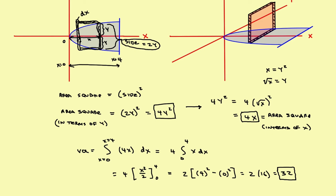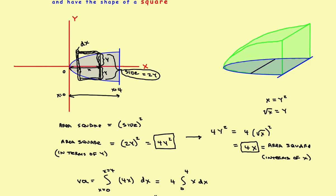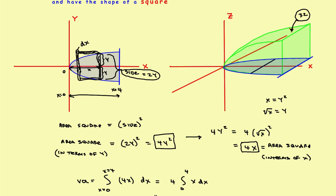Let's go back and look at what that actually means. Putting the green solid back in with the axis, the volume of this object is 32 cubic units.